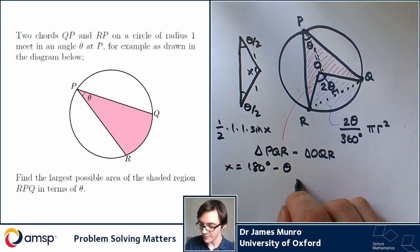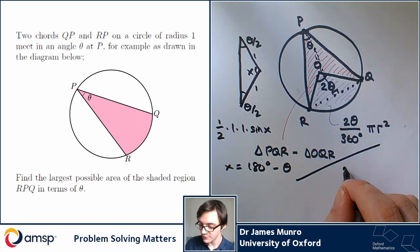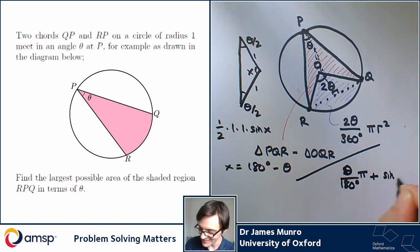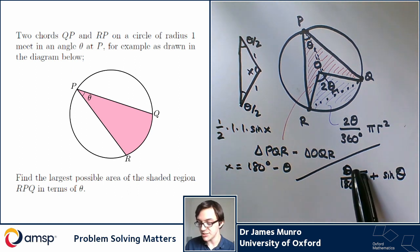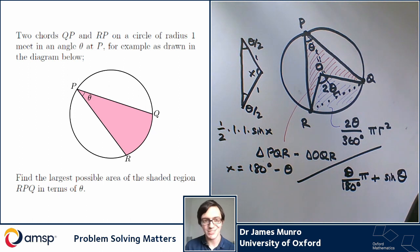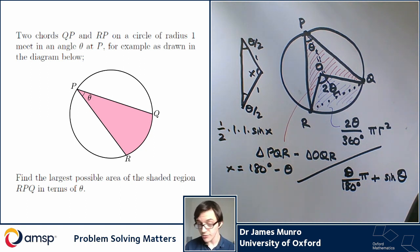Putting it all together, I get my final answer for the area as theta over 180 degrees times pi — that's from the purple region — plus two lots of half of one times one times sine theta. So my final answer is: theta measured in degrees divided by 180 degrees, times pi, plus sine theta. The original question was asked in terms of radians, so the formula is even nicer in radians as the first term simplifies. These days we don't assume you've seen radians, so we'd give the answer in terms of degrees. That's the maximum possible area: the biggest triangle plus the fixed region.